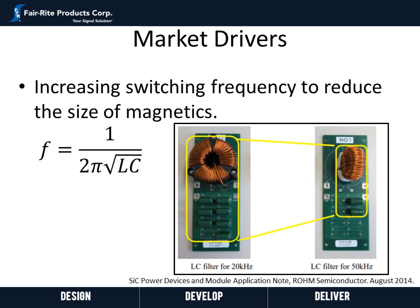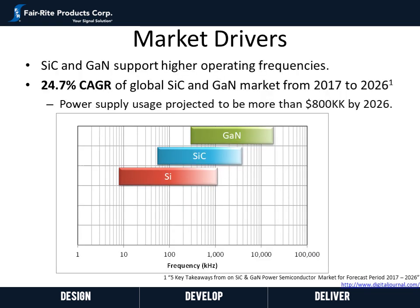Up to 50 kilohertz, with silicon carbide and GaN technologies higher frequencies can be supported. Silicon is good up to around 1 megahertz or so, silicon carbide going up to around 3 megahertz or so, and GaN beyond 10 megahertz.